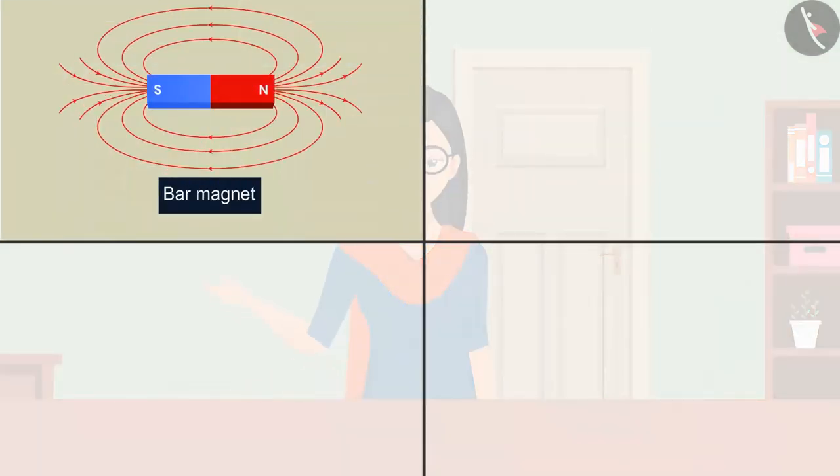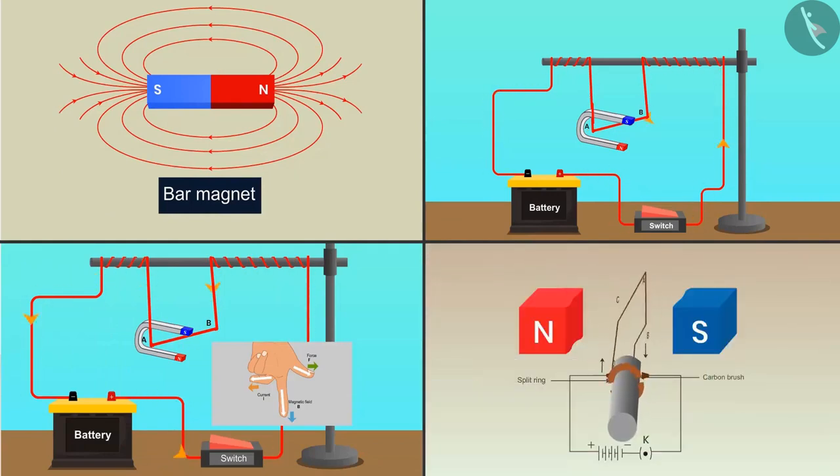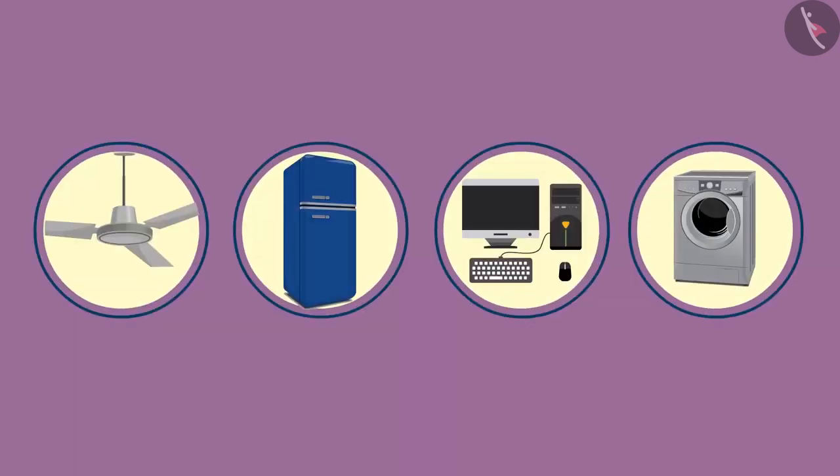In our last video we understood what happens when a current carrying conductor is placed in a magnetic field. We also understood Fleming's left hand rule and the working principle of electric motor and its applications like fan, refrigerator, computer and washing machine.